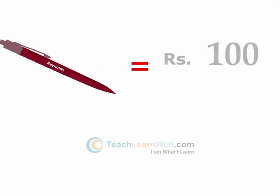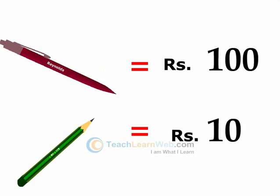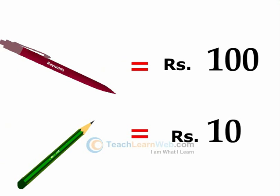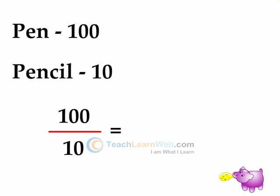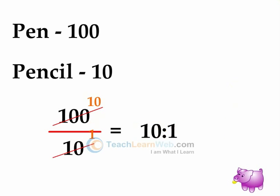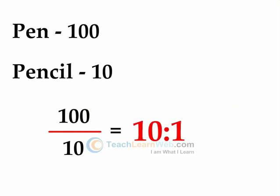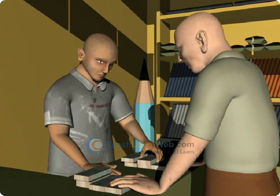Cost of a pen is Rs. 100 and cost of a pencil is Rs. 10. How many times the cost of a pencil is the cost of a pen? The ratio of the cost of a pen to the cost of a pencil is determined by dividing the cost of the pen by that of the pencil. Two quantities can be compared only if they are in the same unit.